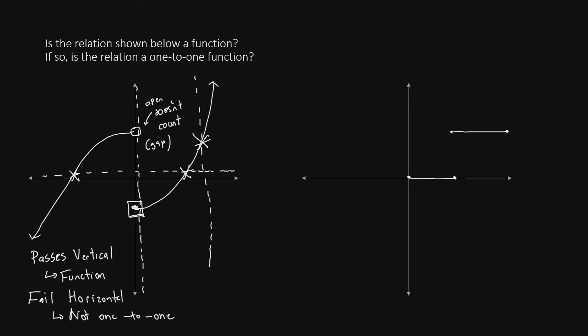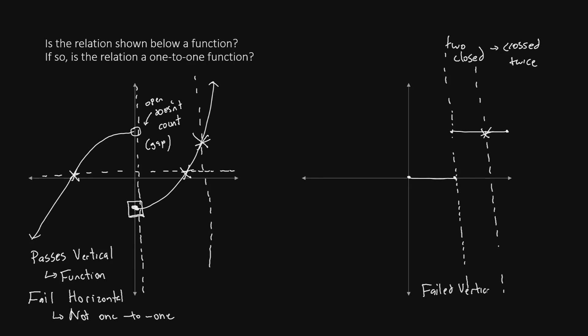On the right side, we have a graph that is also an example of a graph with discontinuities. For most of the graph, you could draw a vertical line that would cross through only one time. However, look toward the center of the graph — there is a vertical line that is possible to draw that crosses through two closed circles. Because you have passed through two closed circles, that means you have crossed the function twice. Therefore, this is not a function at all, because it has failed the vertical line test. There is no reason to give it the horizontal line test, and we can safely say it is not a function, based on the failure at the two stars drawn.